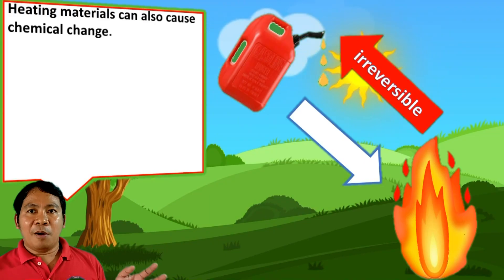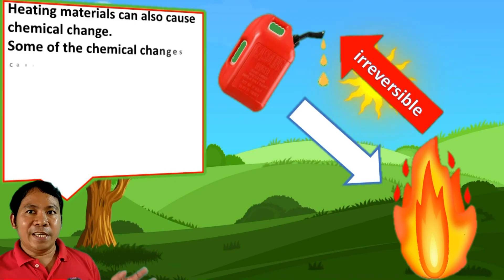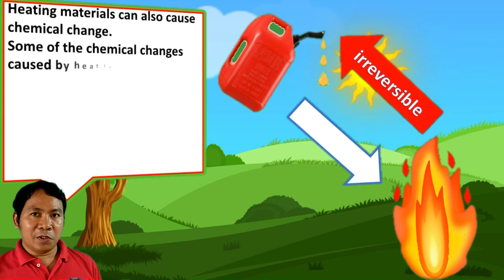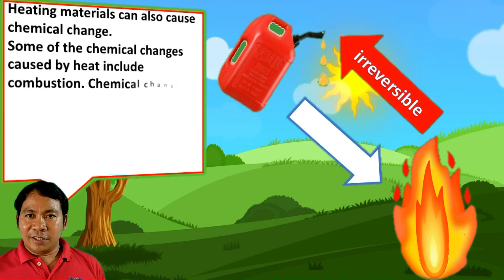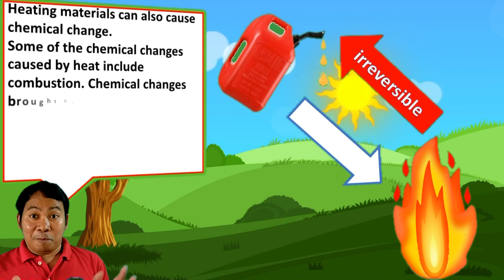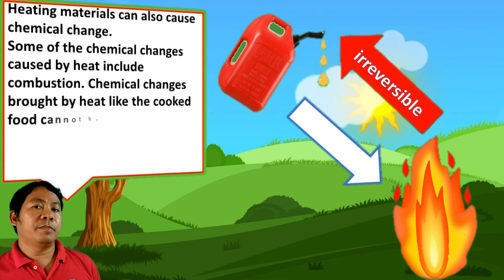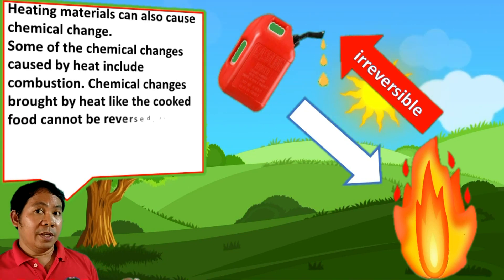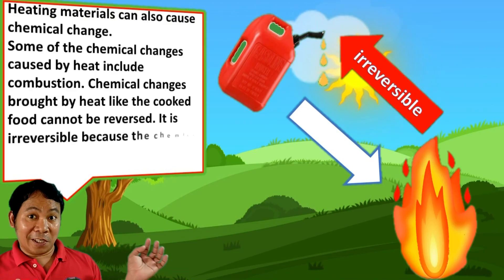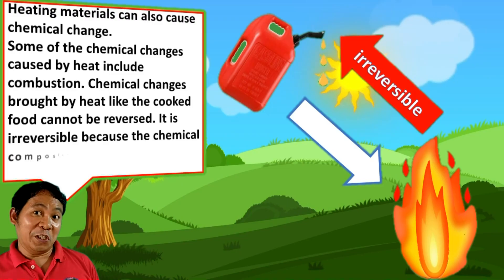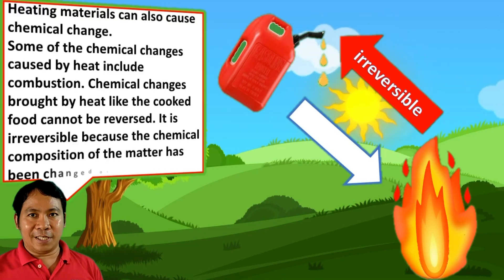Some of the chemical changes caused by heat include combustion. Chemical changes brought about by heat, like cooked food, cannot be reversed — it is irreversible because the chemical composition of matter has been changed or affected.